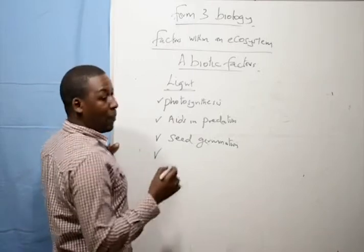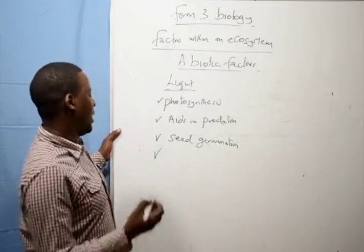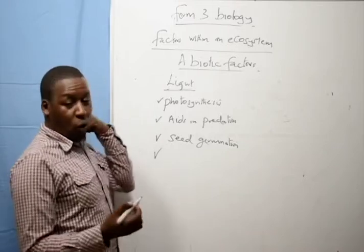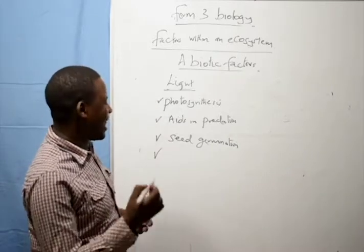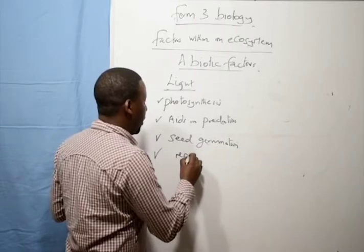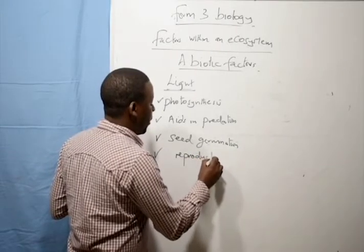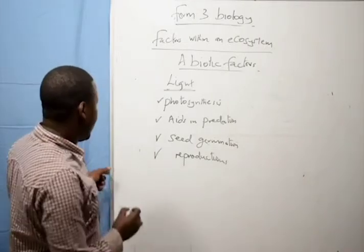Some plants cannot undergo reproduction, especially those that undergo alternation of generation, that cannot occur without presence of light. Light is important in reproduction of plants, very very important.